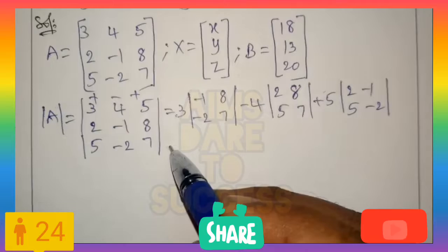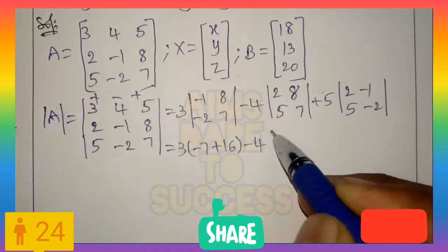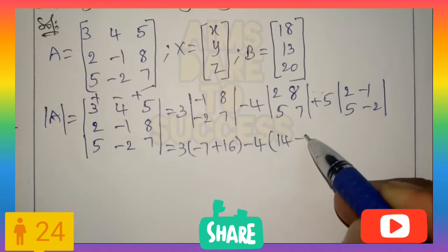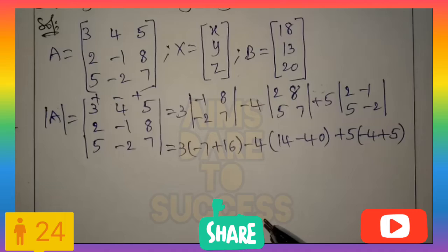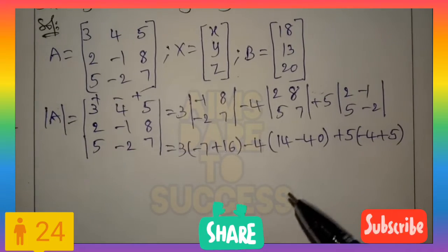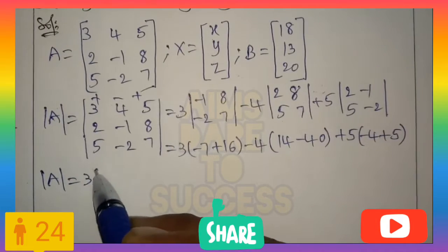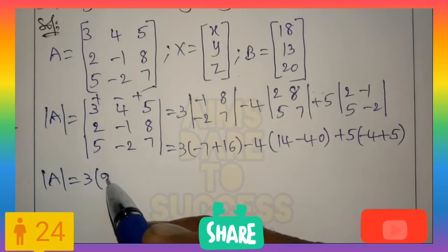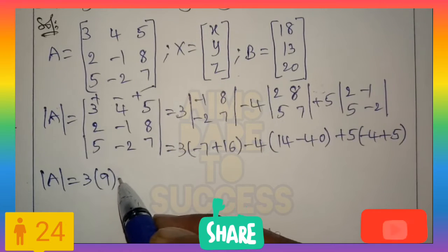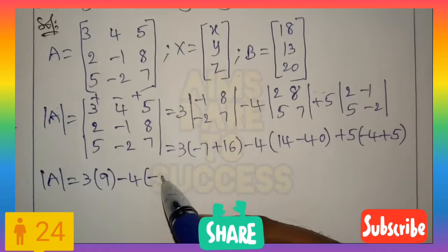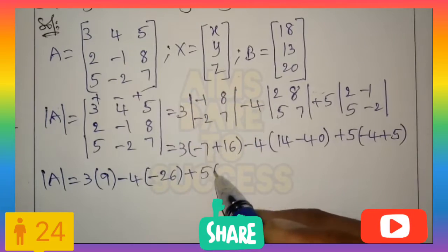Apply the 2×2 determinant concept (AD − BC). So: 3 into (−7 − (−16)), minus 4 into (14 − 40), plus 5 into (−4 − (−5)). Det(A) equals: 3 into (−7 + 16), minus 4 into (14 − 40), plus 5 into (5 − 4). That gives 3×9, minus 4×(−26), plus 5×1.